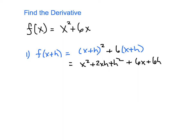Step two is we'll form the difference then. And remember that difference is f of x plus h, which we found above, minus the original function f of x. So essentially, we're going to subtract off x squared plus 6x. That looks like x squared plus 2xh plus h squared plus 6x plus 6h minus x squared plus 6x.